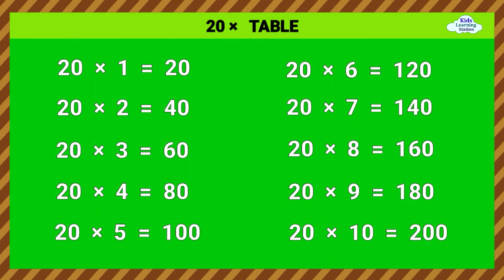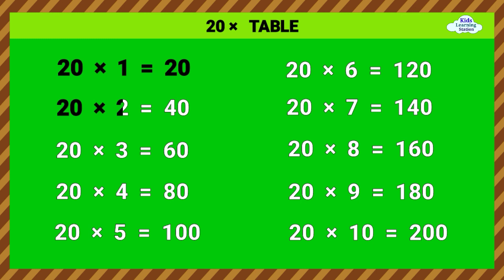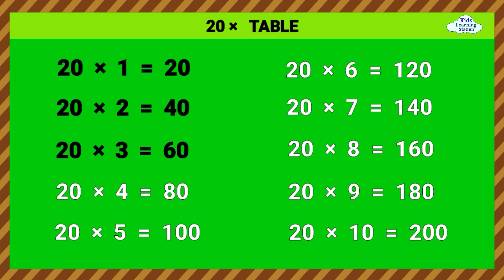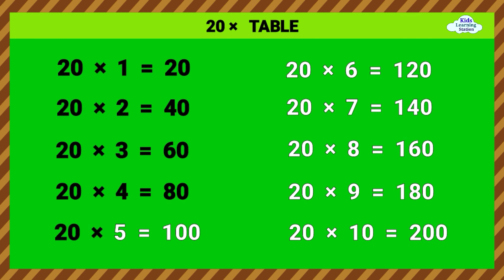Twenty Times Table. 20 times 1 equals 20. 20 times 2 equals 40. 20 times 3 equals 60. 20 times 4 equals 80. 20 times 5 equals 100.